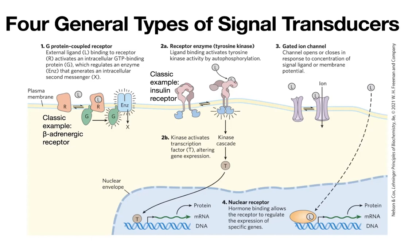We also have our gated ion channels, where things open up in response to a stimulus. And we have things like steroids, which can go directly into the nucleus and bind to receptors there to alter transcription.